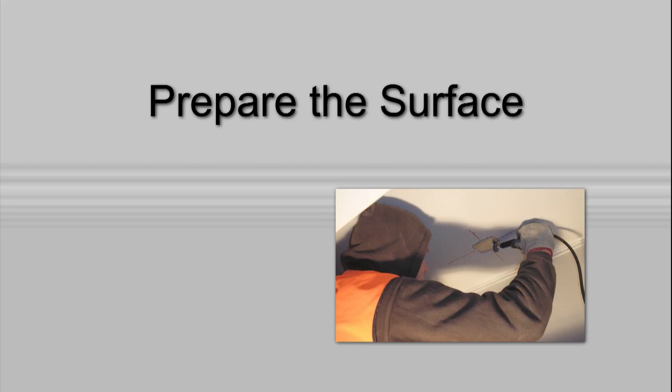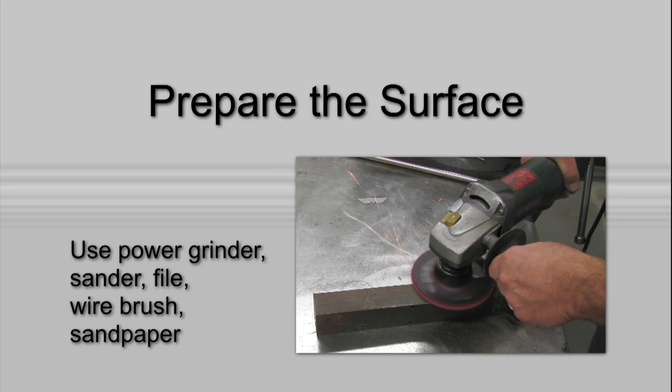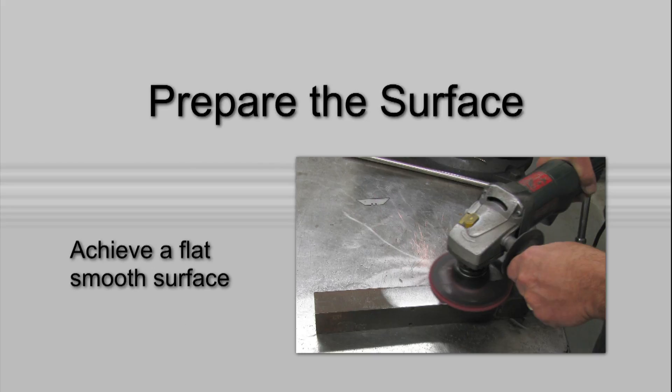The surface of the steel member should be flat and clean, free from rust, grease, and pitting. Degrease the surface using an appropriate cleaning agent, then use a power grinder or sander, file, wire brush, or sandpaper to achieve a flat, smooth surface.